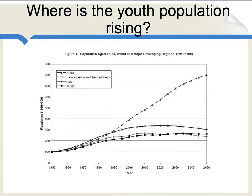Because of declining fertility, in many parts of the world, the youth population has either peaked or it is falling. The line for Africa shows the youth population is still rising. The lines for Latin America and the Caribbean, Asia, and the world show that the youth population has either peaked or is fairly close to peaking. This means that many of these societies, even in developing countries, are already starting to become older. Africa, on average, is not becoming older, but will have a substantial number of young people entering the workforce.